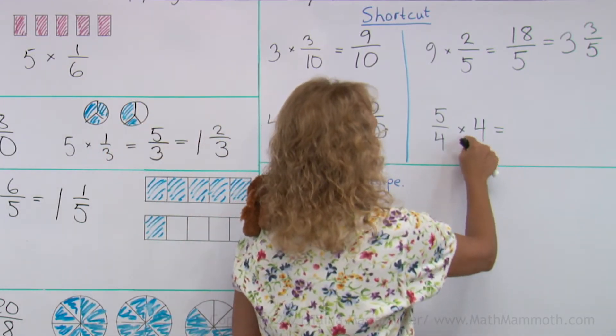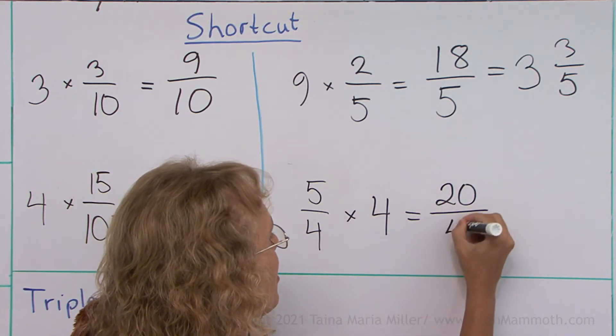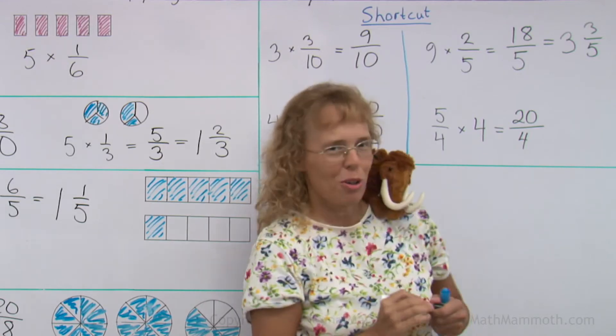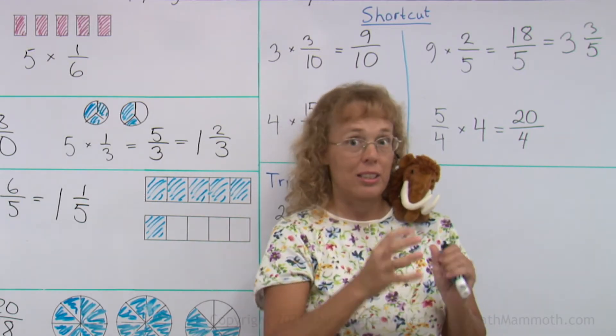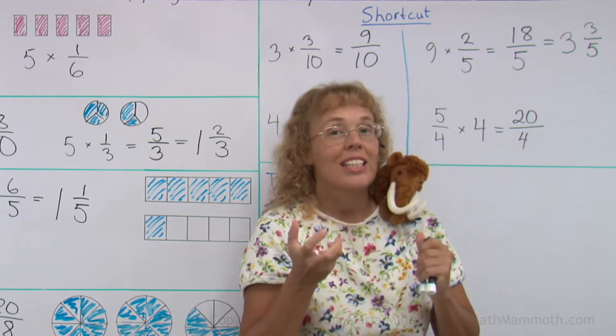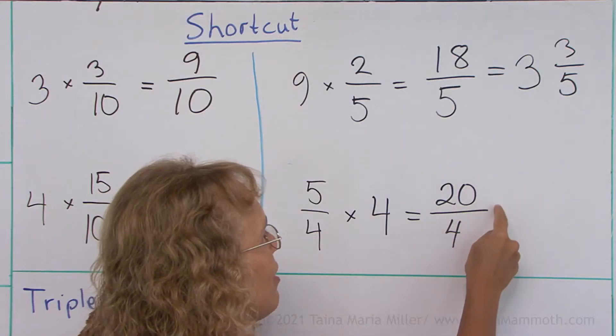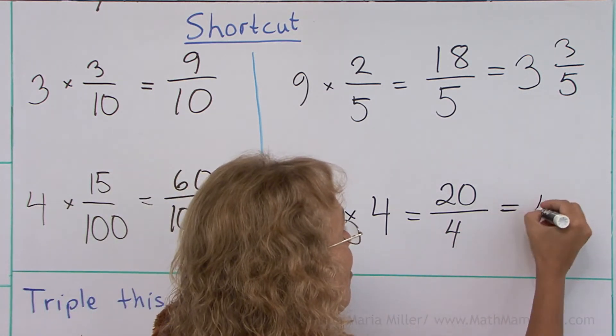So I still go 4 times 5 as my shortcut. And I get 20 fourths. Now how many whole pies do we get out of that if each 4 fourths makes a whole pie? And this time you can look at it as a division problem. 20 divided by 4 equals 5. This is exactly 5 whole pies.